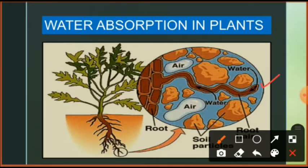Along with the root here, what you can see are soil particles. Actually, we have gravitational water which penetrates deep into the ground due to gravity — due to gravitational pull — and that water is not available to plants. So the water that plants absorb for their use, what is that? We call it capillary water.